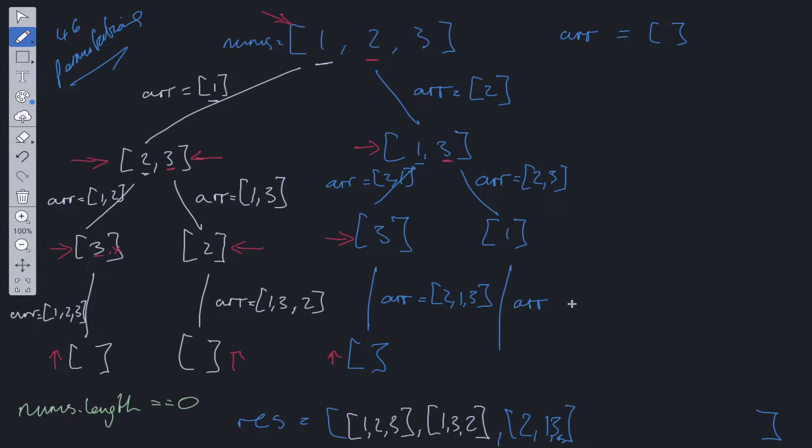Then we're left with one. One is taken and pushed into the array, so it would be two, three, one. Left with an empty array, push into res. Two, three, one. Time to backtrack.